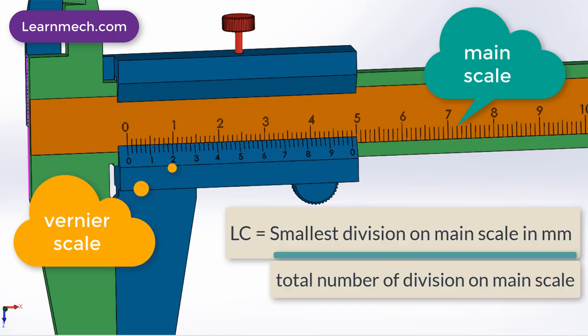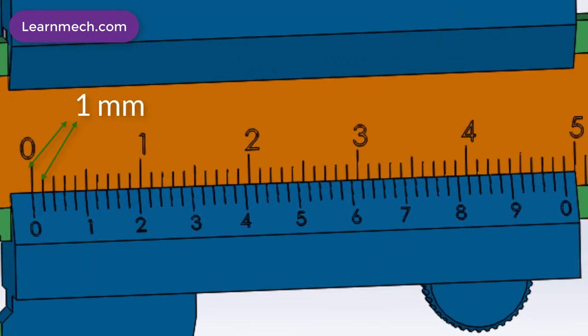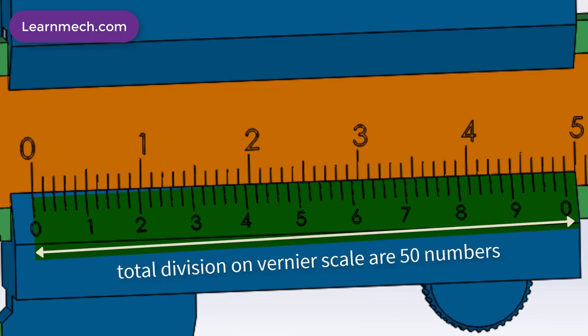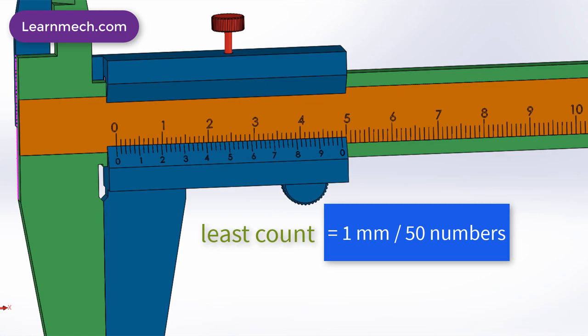This can be calculated by smallest division value on main scale in millimeter divided by total number of divisions on the Vernier scale. Here in this case, 1 mm is one division value divided by 50 numbers which is total count of Vernier scale lines, equal to 0.02 mm. So least count is 0.02 mm.